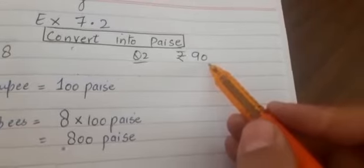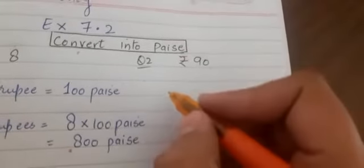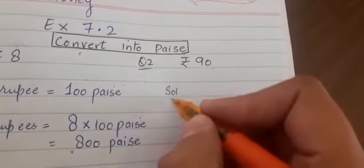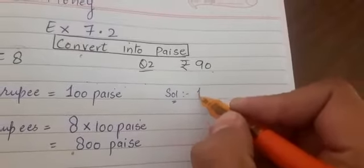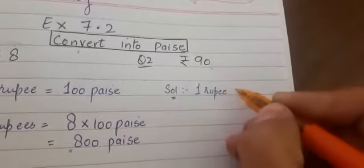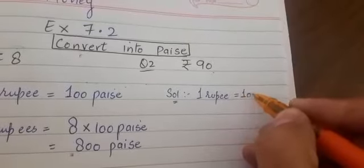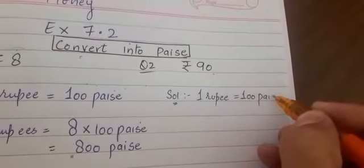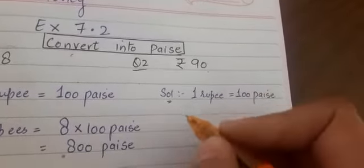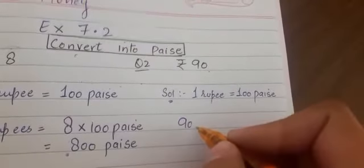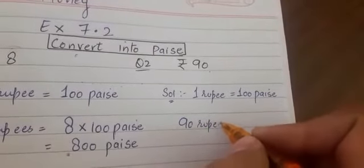Similarly, if it is a two-digit number of rupees to be changed into paise, the method followed is the same. 1 rupee is equal to 100 paise. So 90 rupees makes how many paise?